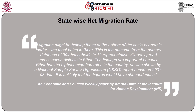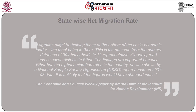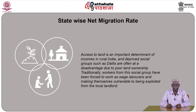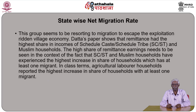Net migration rates across states clearly show that Bihar has the highest number of out-migrants compared to in-migrants per thousand population. Access to land is an important determinant of incomes in rural India, and deprived social groups such as Dalits are often at a disadvantage due to poor land ownership. Traditionally, workers from this group have been forced to work as wage laborers, making them vulnerable to exploitation by local landlords. This group appears to be resorting to migration to escape the exploitation-ridden village economy.